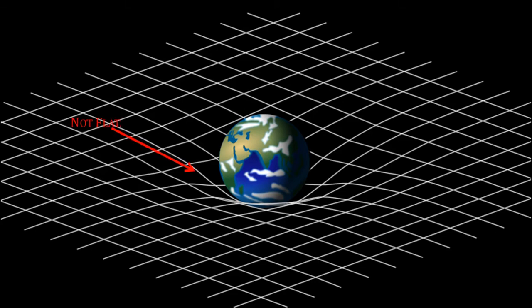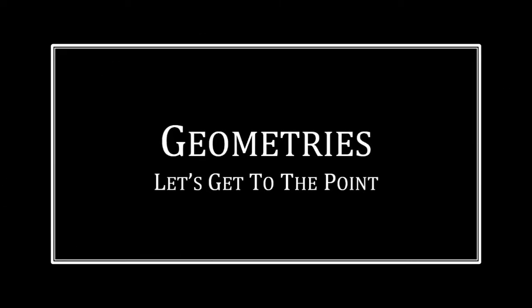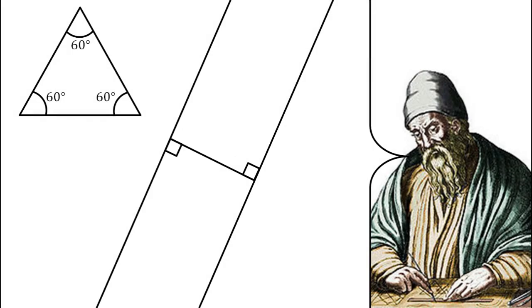Describing curvature of a 4D entity is difficult, but a useful analogy is the geometry of curved 2D surfaces. We are most familiar with flat plane, or Euclidean geometry, where angles in a triangle add up to 180 degrees, and so on.